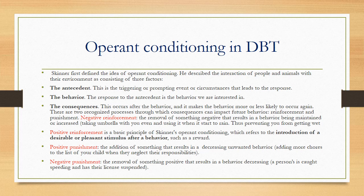Negative reinforcement is the removal of something negative that results in a behavior being maintained or increased. For example, if a girl takes out an umbrella when it starts to rain, it prevents her from getting wet — this teaches us to behave in ways that help us get rid of unhelpful or unpleasant responses. Positive reinforcement is the introduction of a desirable or pleasant stimulus after a behavior, such as a reward — for example, a parent promising chocolate to a child who gets full marks on a test.